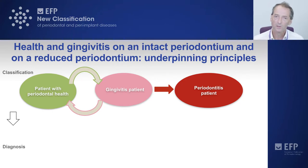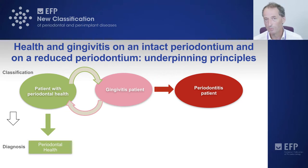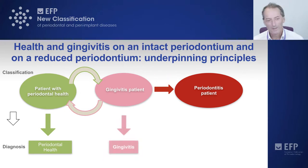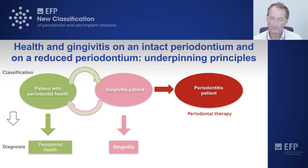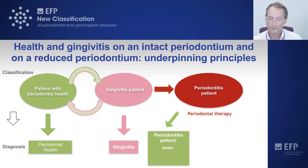Translating classification into diagnosis is fairly straightforward for health — the classification pretty much matches the diagnosis, so a case of health is given a diagnosis of periodontal health. Similarly, a case of gingivitis gives a diagnosis of gingivitis. Things are different with a periodontitis patient, because the periodontitis patient will undergo therapy and at the end of that therapy may enter a different clinical situation. Optimally, the periodontitis patient will stabilize, which we define as less than 10% of sites bleeding on probing from the base of the pocket.